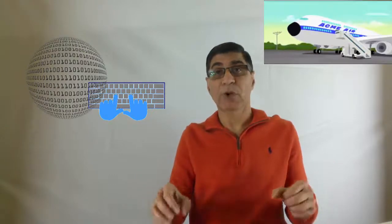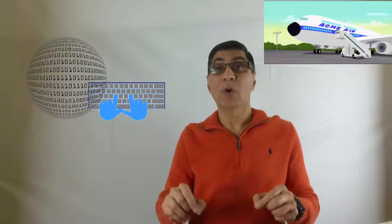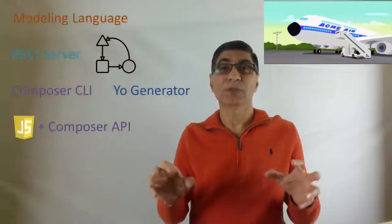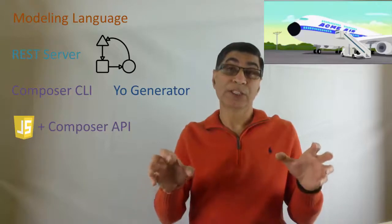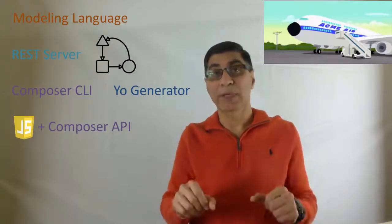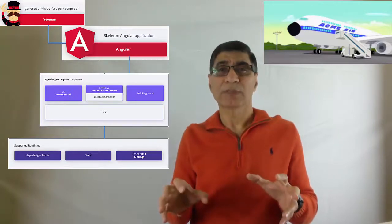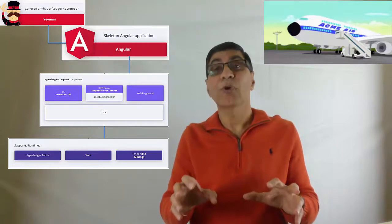After this point, we will incrementally develop a blockchain application for a fictitious company by the name of Acme Airlines. Development process would require you to use all of the tools available in the composer framework. As part of the course, you will learn the composer business modeling language. You will code smart contracts or chain code using JavaScript and composer API. You would understand how you can leverage composer rest server for architecting an end-to-end solution for your application.